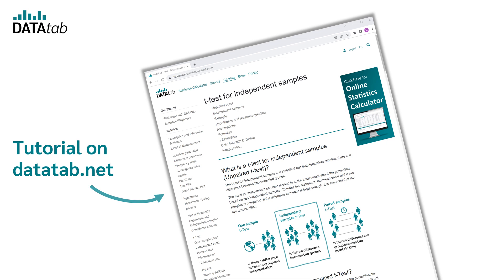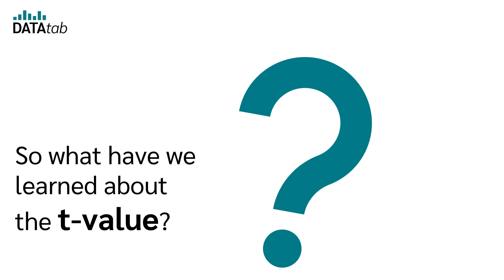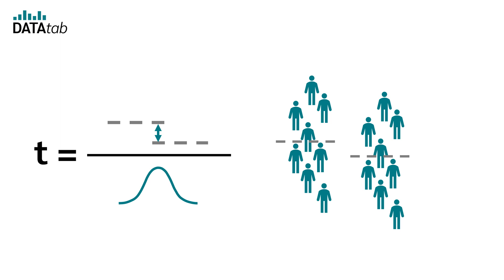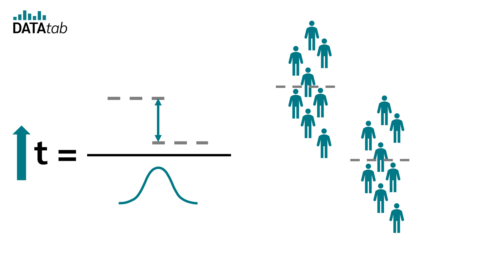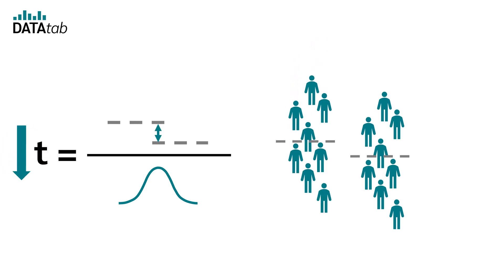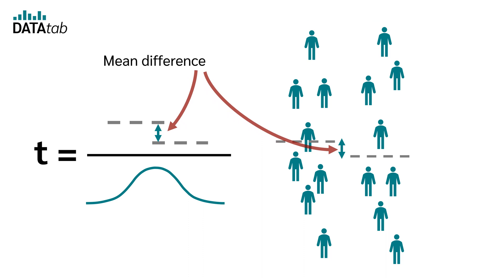No matter which t-test we calculate, the t-value will be greater if we have a greater difference between the means, and smaller if the difference between the means is smaller. Furthermore, the t-value becomes smaller when we have a larger dispersion of the mean — so the more scattered the data, the less meaningful a given mean difference is.